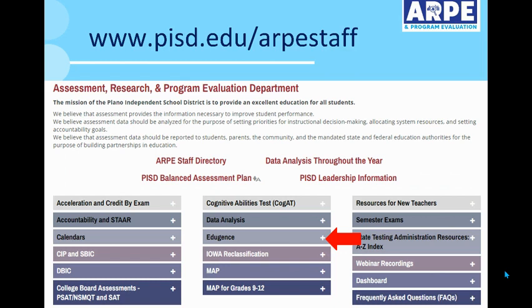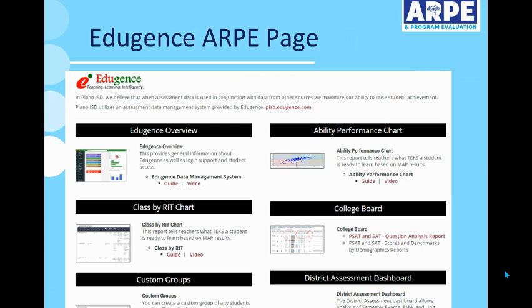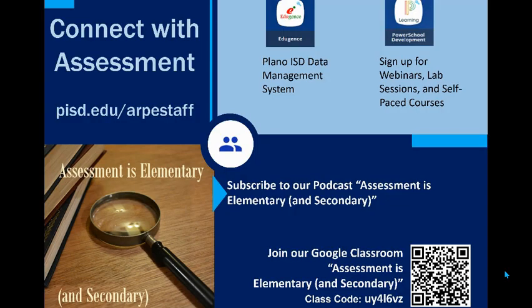Our website is your guide for EduGents and you'll find a variety of tools and resources at www.pisd.edu/ARPE-staff — click on EduGents in the center of the screen. Look for thumbnails and descriptions of different reports, and search for guides and videos about how to access and read them. Remember that we in the assessment department are here to support you. If you need help finding, analyzing, or using the data, please reach out to us — that is what we're here for and we are happy to help you.